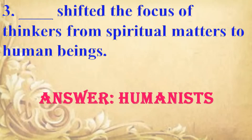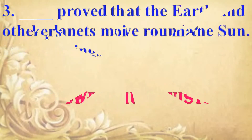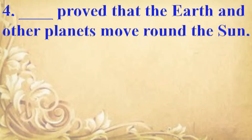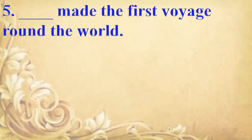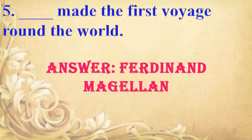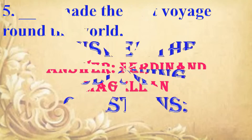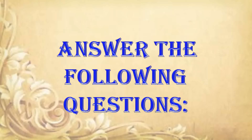Next question: this proved that the earth and other planets move round the sun. Answer: Copernicus. Next question: this person made the first voyage around the world. Answer: Ferdinand Magellan.